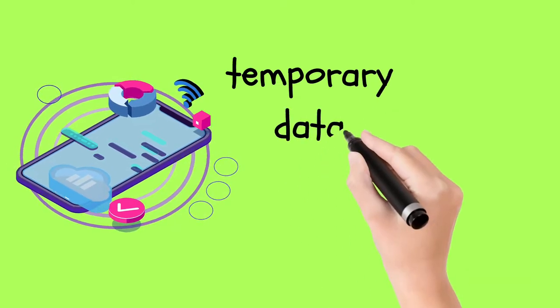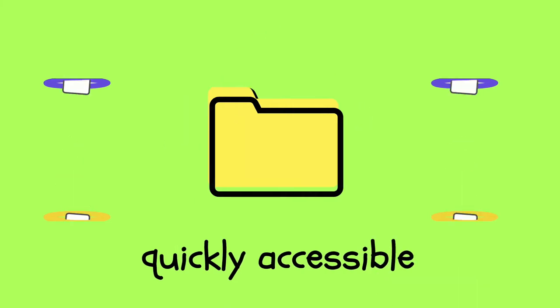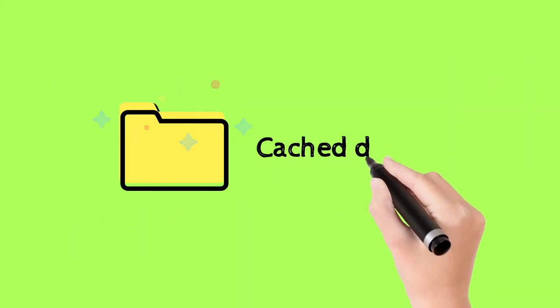When we open an app for the first time, the app generates some temporary data files from its home screen or landing page and saves them in its reserved space in the phone storage, which is quickly accessible. These are called cached data.